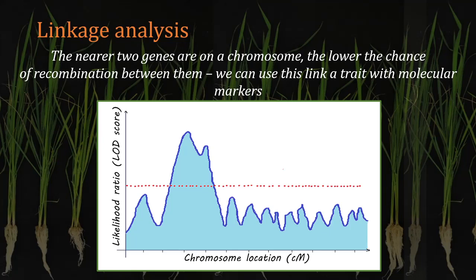Program output often looks something like the graph shown here, where chromosomal position is plotted against the probability or likelihood that a specific locus has an effect on the trait of interest. The red dotted line represents a probability threshold, and above this we can see a peak — a chromosomal position linked with the trait of interest. We can conclude that genes influencing the trait lie somewhere in this region. Further fine mapping and mutational analyses are required to fully elucidate exactly which genes are involved.